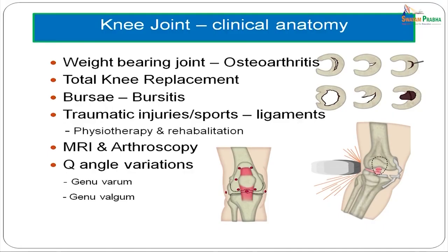First, a few words about the clinical anatomy of the knee joint. As you know, the knee joint is a weight-bearing joint and, as all weight-bearing joints, it is prone to osteoarthritis. Osteoarthritis primarily results in destruction of the articular cartilage and manifests as severe pain, swelling and restriction of movements. While the initial forms of osteoarthritis can be treated with lifestyle changes and simple analgesia, advanced forms invariably will require a total knee replacement.